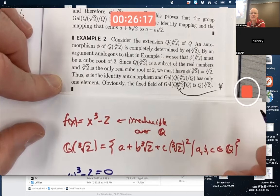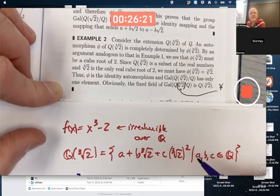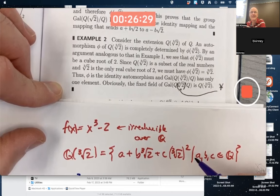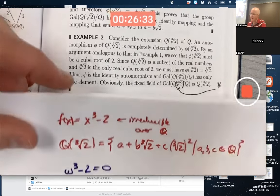So the Galois group is trivial. The Galois group is trivial. It's just got one element, epsilon. Yes, there are other cube roots of 2. What are they?